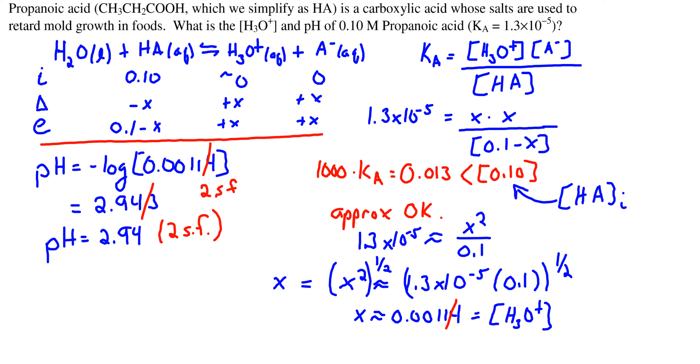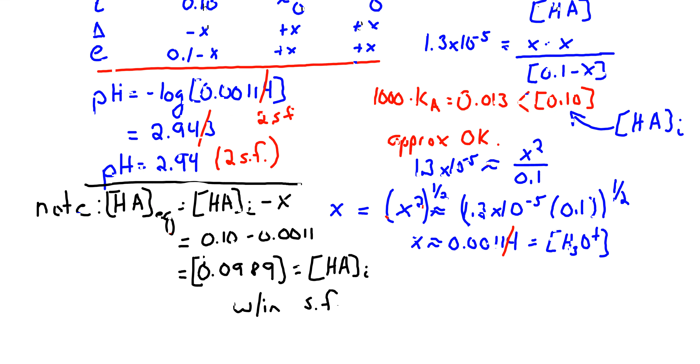Note significant figures: when calculating pH, only those decimals, numbers past the decimal point, count as significant. Before we move on, I want to show that we were justified in making our approximation—the equilibrium concentration of our acid is, within sig figs, the same as our initial concentration.